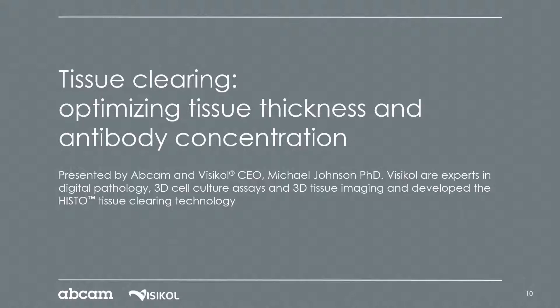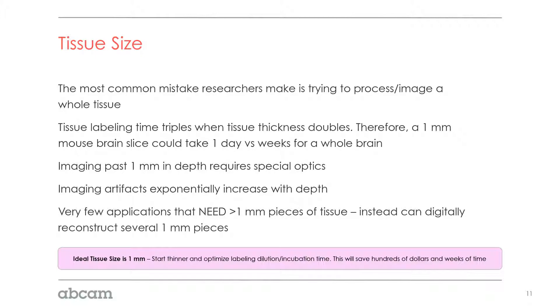Because of that, we have a protocol here for optimizing labeling, starting small, and trying to ensure uniform labeling before moving up to whole brain-sized tissue. For many questions, going to a very large tissue size is actually not ideal. Tissue size is the most important consideration for tissue clearing, and where we see the most issues with researchers adopting tissue clearing into their workflow.